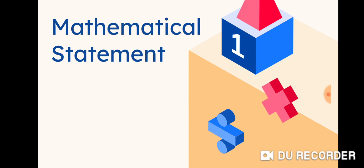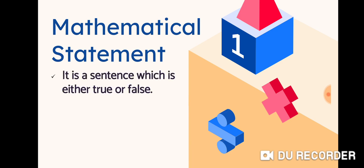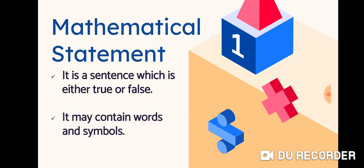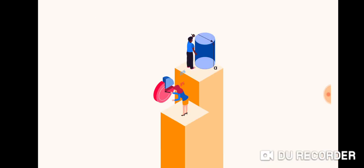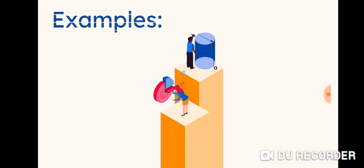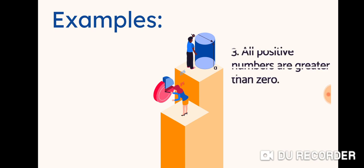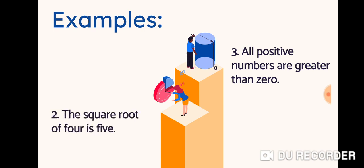So what is a mathematical statement? A mathematical statement is a sentence which is either true or false. It may contain words and symbols. Let's have some examples. All positive numbers are greater than zero, which is true. The square root of 4 is 5, which indicates a false statement.